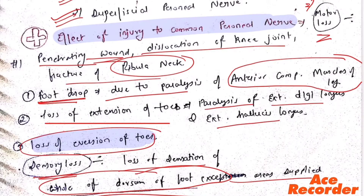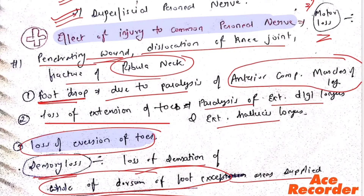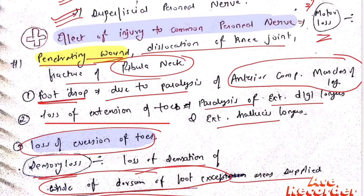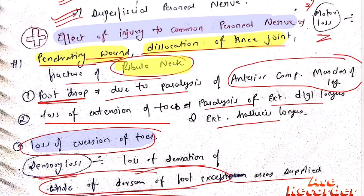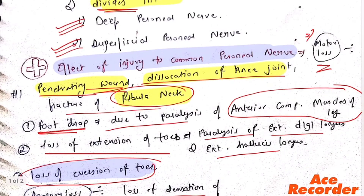Now let's talk about the effect of damage to the common peroneal nerve. Causes of damage include penetrating wound, dislocation of the knee joint, and fracture of the fibula.